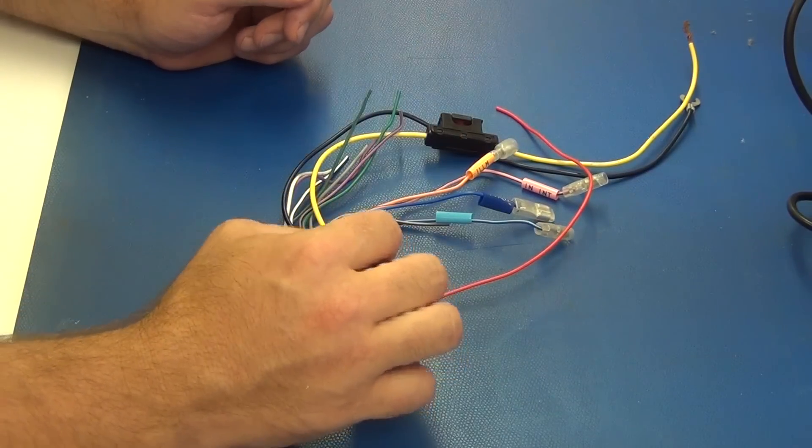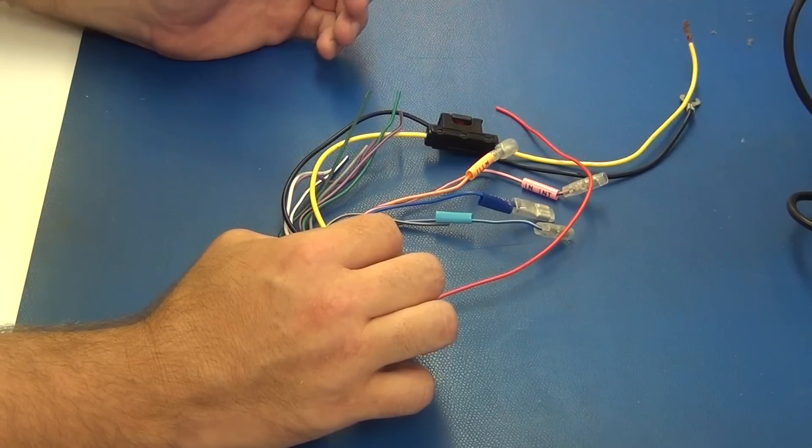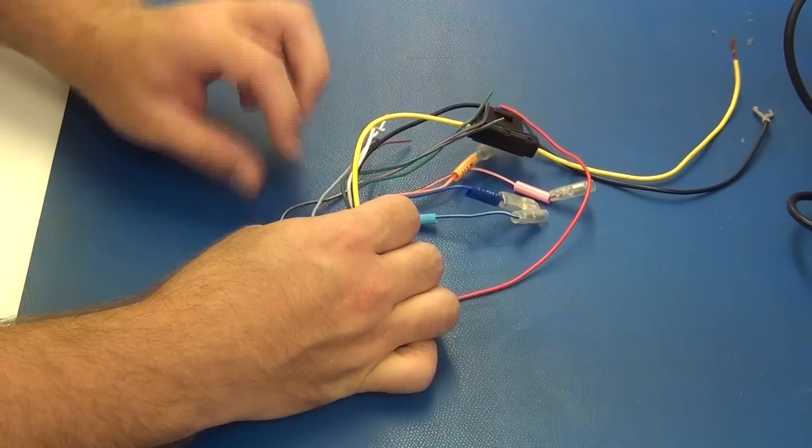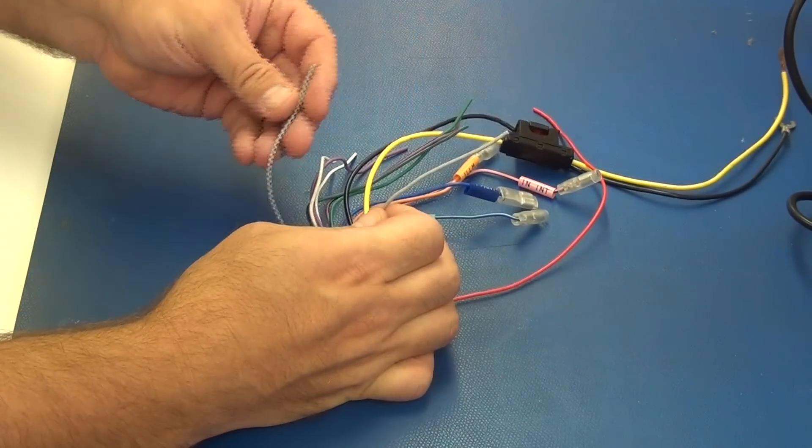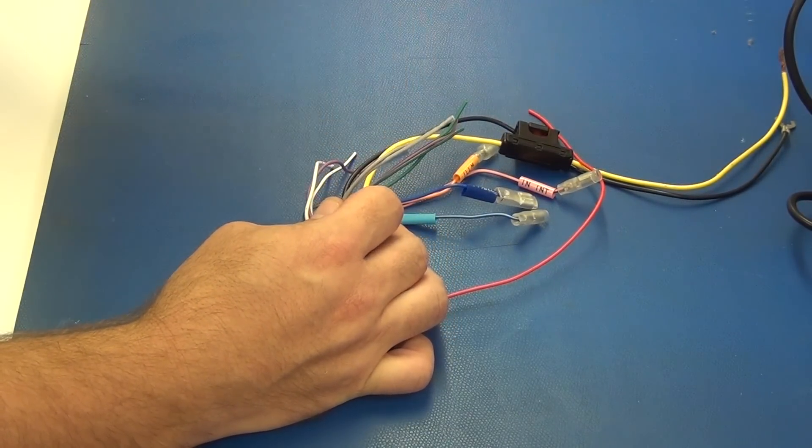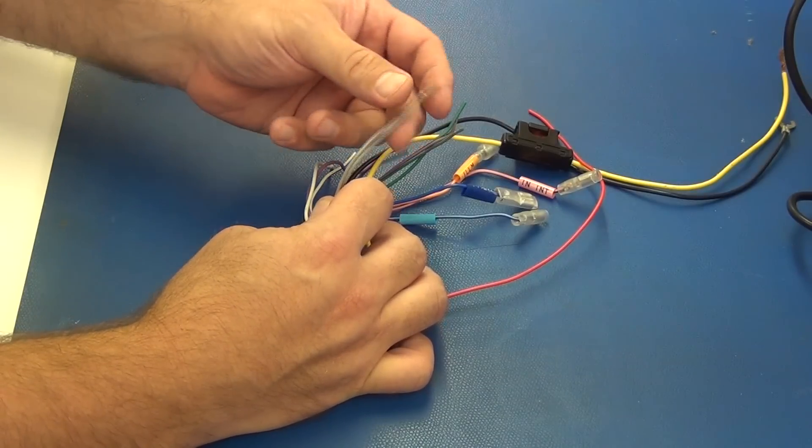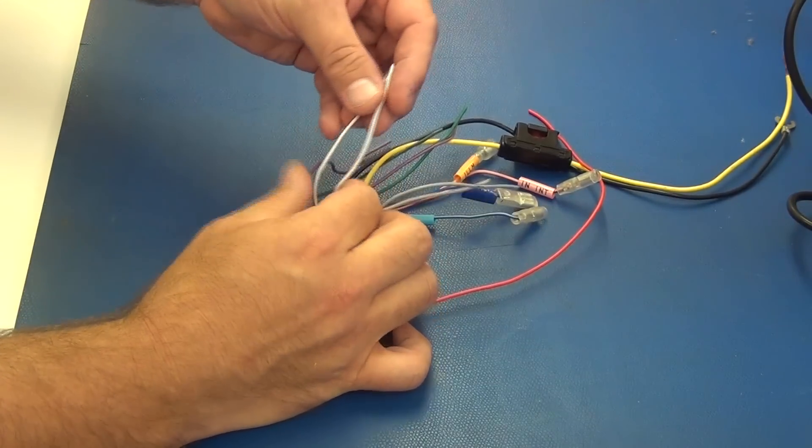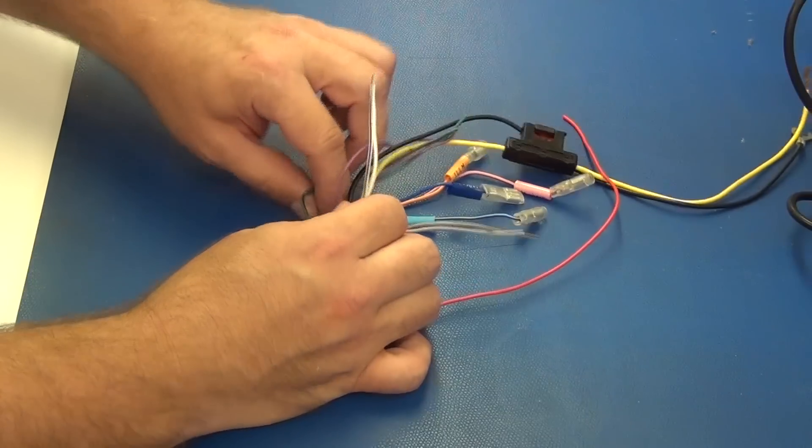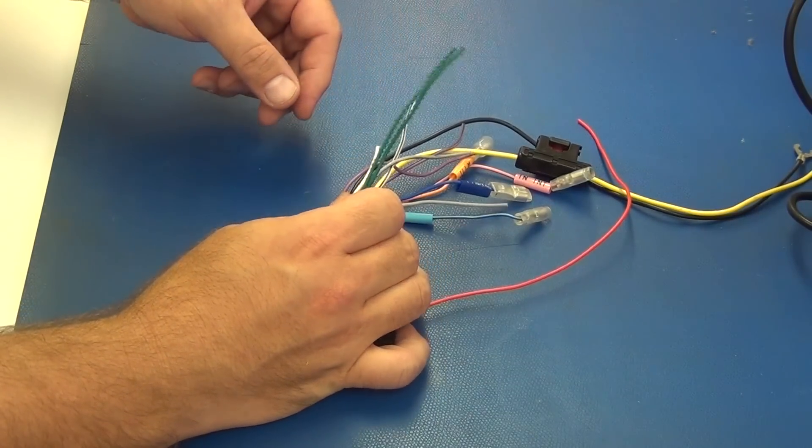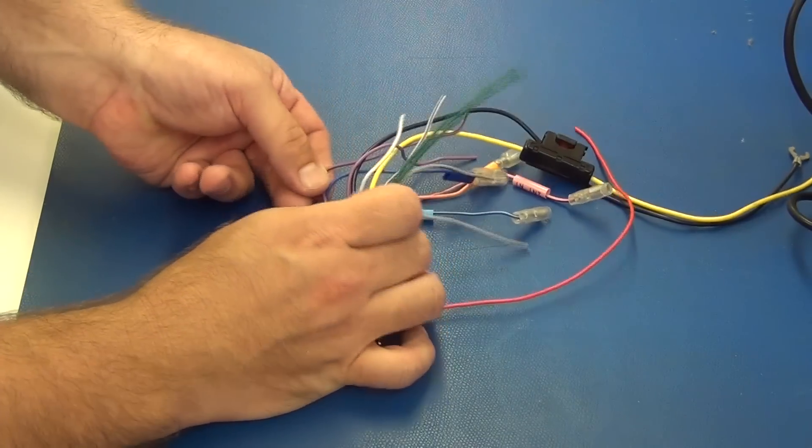As far as speaker connections, typically these are pretty standard too. Your gray connections, you'll have a solid gray lead and a gray lead with a black stripe. The same thing will go for white, violet, and green. Your gray is your front right speakers. Your white would be your front left speakers. Your green would be your rear left speakers, and your purple or violet would be your rear right speakers.